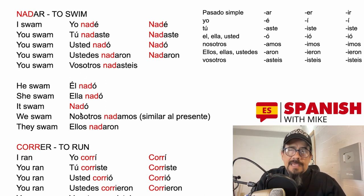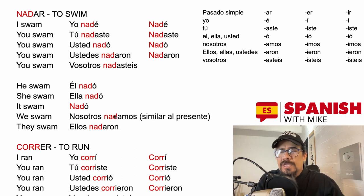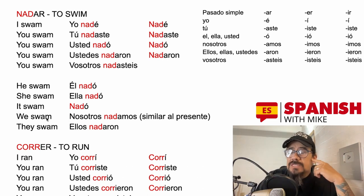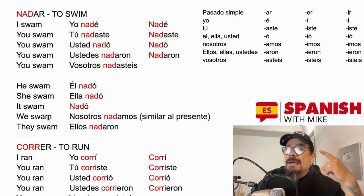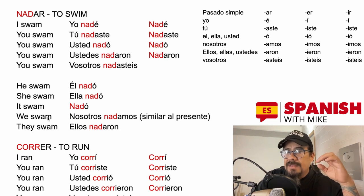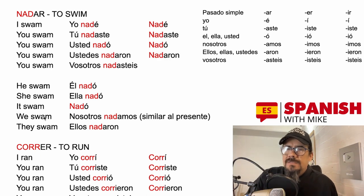I'd like to point out that for 'we' with a regular -ar verb in the pretérito indefinido, the conjugation sounds exactly like the simple present. So 'nosotros nadamos todos los días' (we swim every day — present) sounds the same as 'nosotros nadamos ayer' (we swam yesterday — past). The conjugation is identical. One of the subtleties of Spanish.